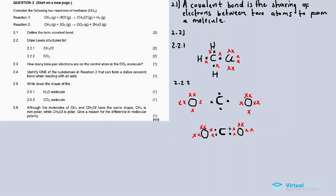2.4 asks to identify one of the substances in reaction two that can form a dative covalent bond when reacting with an acid. It's water. A dative covalent bond is defined as a covalent bond in which both electrons come from the same atom.